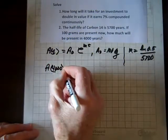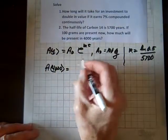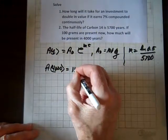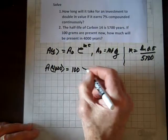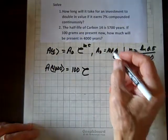A of 4,000 equals A sub 0's 100. And we've got e and the time...